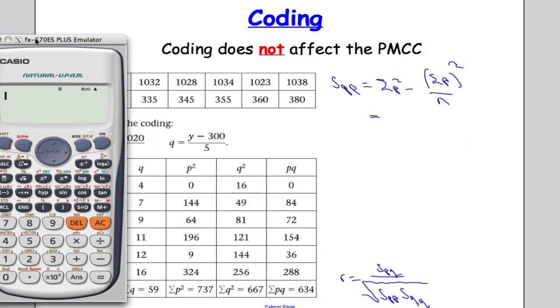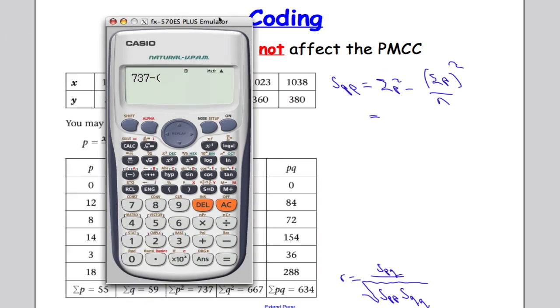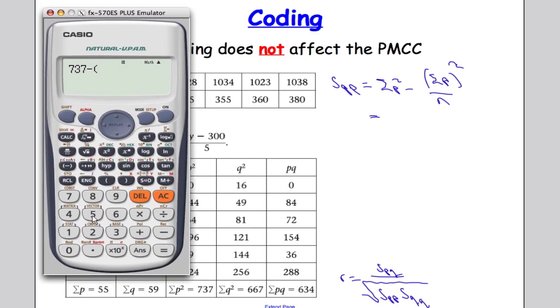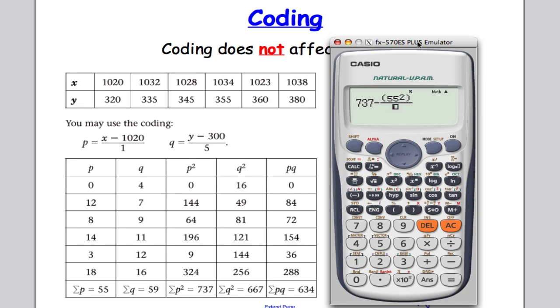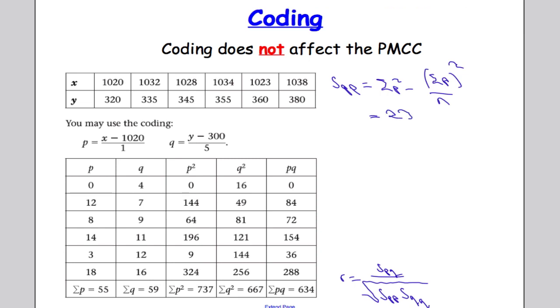Which gives us, plug this into the calculator: sum of p squared, which is 737, minus sum of p squared, which is 55, over n, which in this case is 6, I think 1, 2, 3, 4, 5, 6, yep, which gives us 232.83.